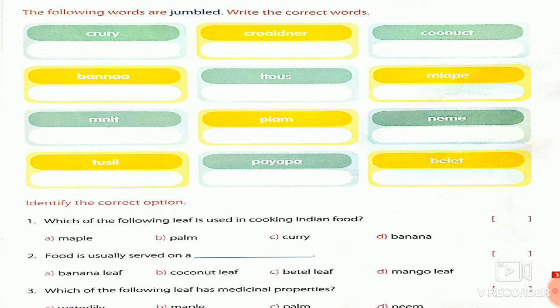Next, on the following page, the words are jumbled — write the correct words by rearranging the jumbled letters. After that, identify the correct option: questions are given with four options each, and you choose the correct answer.